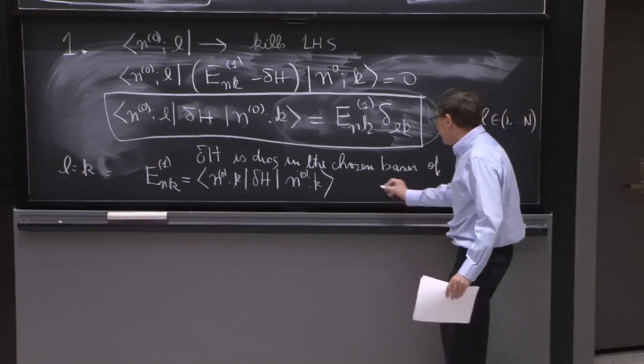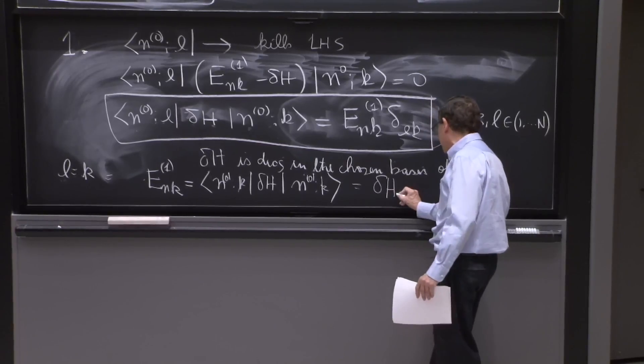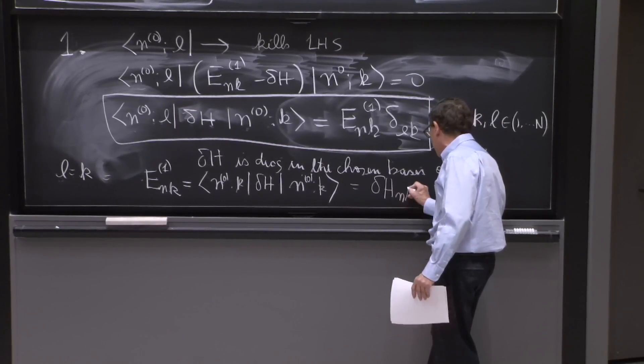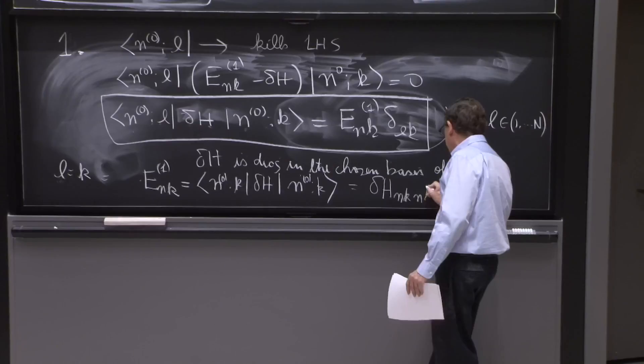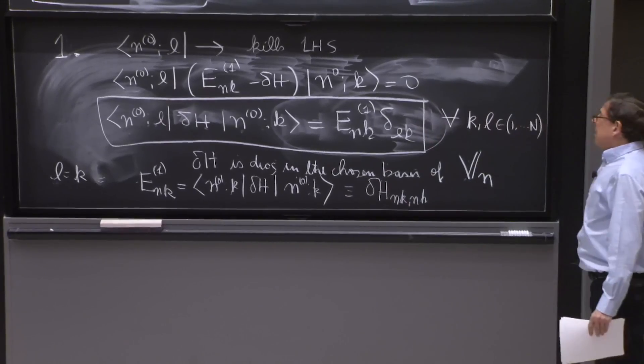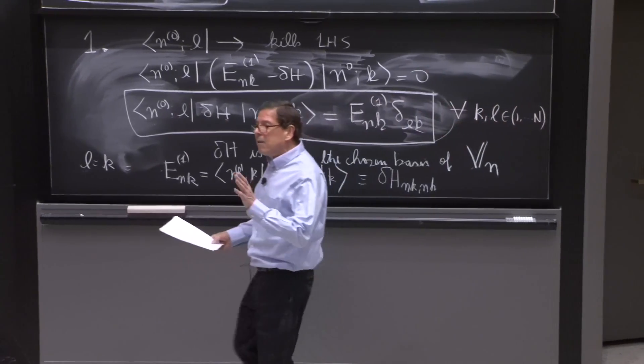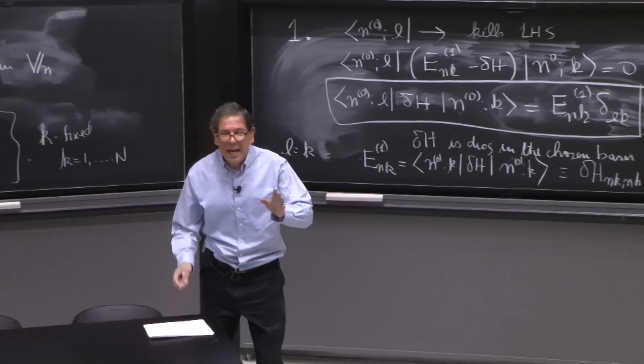So the energy corrections are the diagonal elements of this matrix, what you would expect. So we will write this as delta H, we could put kk. But to remind you it's degenerate, you put nk, nk.